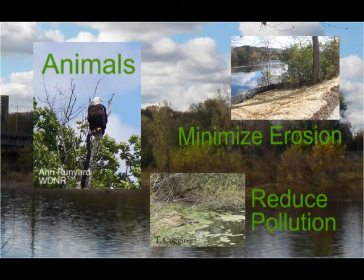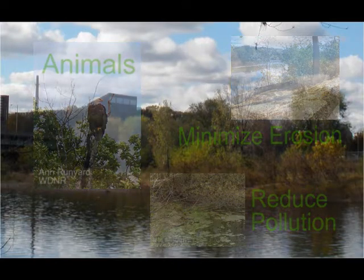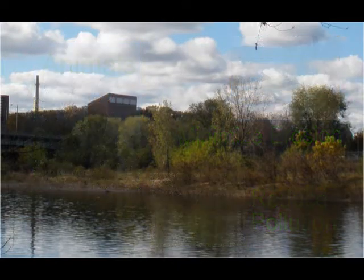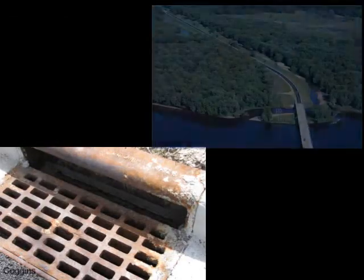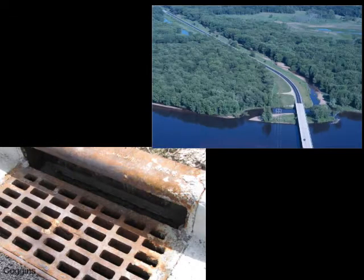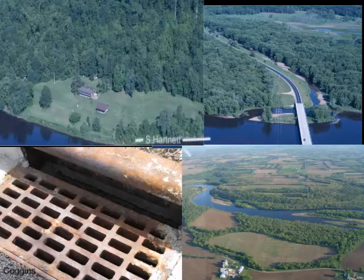Riparian buffers are most important in areas where surface water runoff is likely to carry pollutants into the river. Such areas include city streets, highways, agricultural areas and privately owned waterfront property.